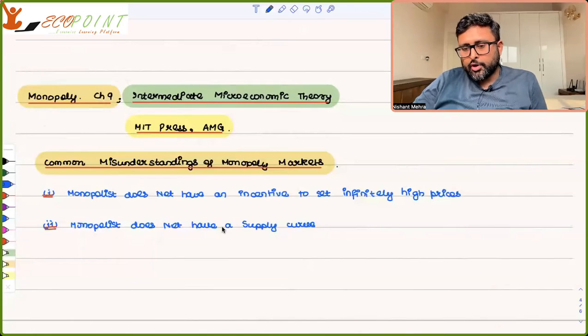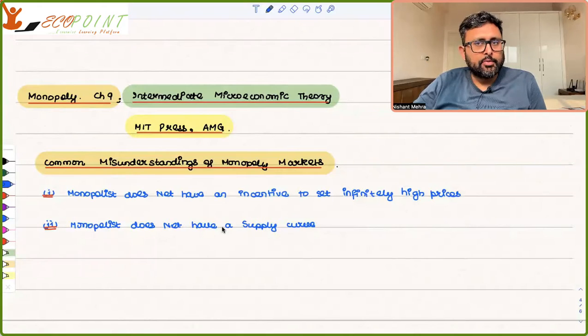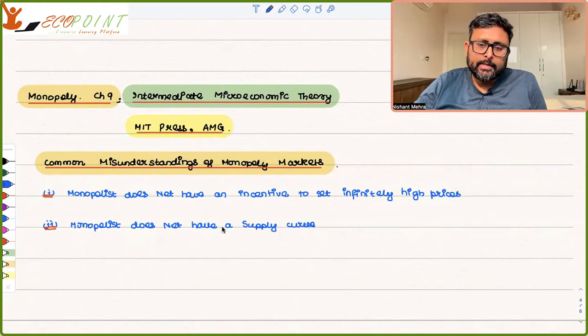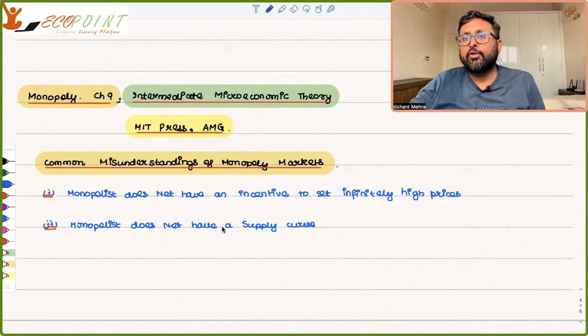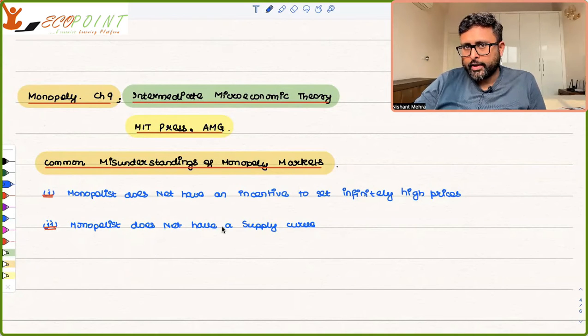So let us take a discussion further for monopoly and we'll talk about the common misunderstandings of the monopoly market. One of the misunderstandings is that monopolist can set whatever price he wants. He can also set infinitely high prices. We'll see that this is not the case.